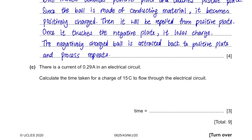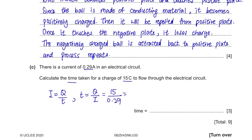Part C: There is a current of 0.29 amperes in an electrical circuit. Calculate the time taken for a charge of 15 C to flow through the circuit. We're given current and charge, and we need to find time. We use the formula I equals Q over T, which is current equals charge over time. Rearranging: time equals charge over current, which is 15 divided by 0.29, giving 51.724. Rounded to 2 significant figures: 52 seconds.